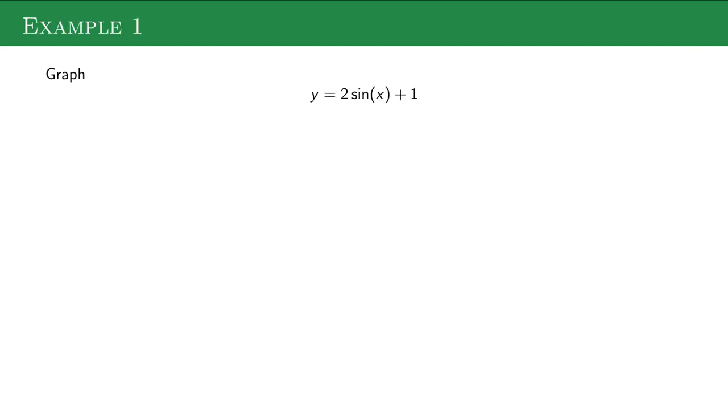How are we going to graph these transformations? We have two main types. We have this number at the back. Just like all our other transformations, this moves our graph up and down. This multiplication at the front, we don't really talk about much with other types of functions. With sine and cosine, this is the amplitude.